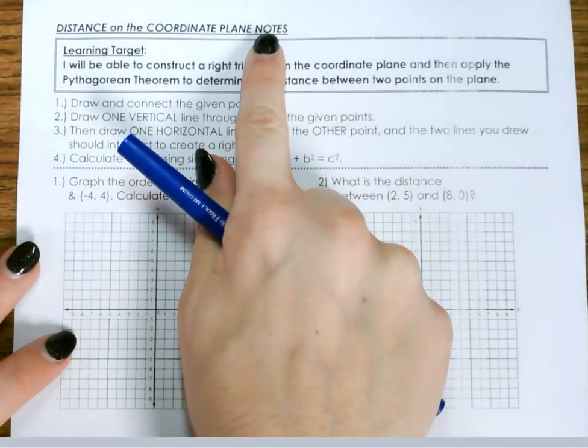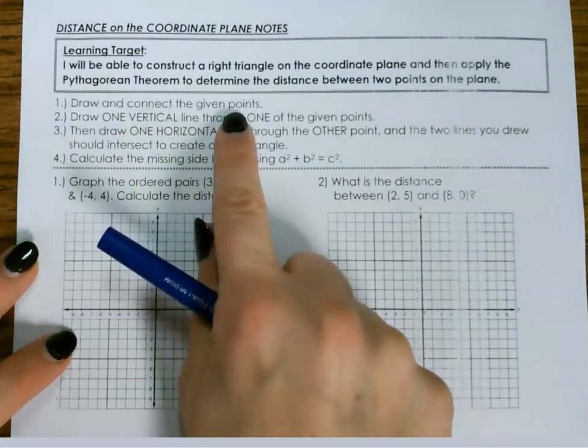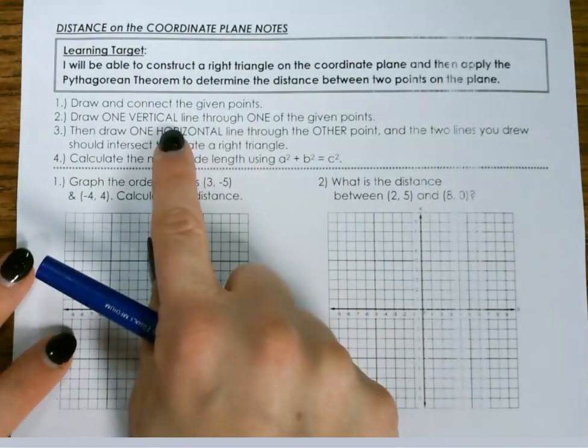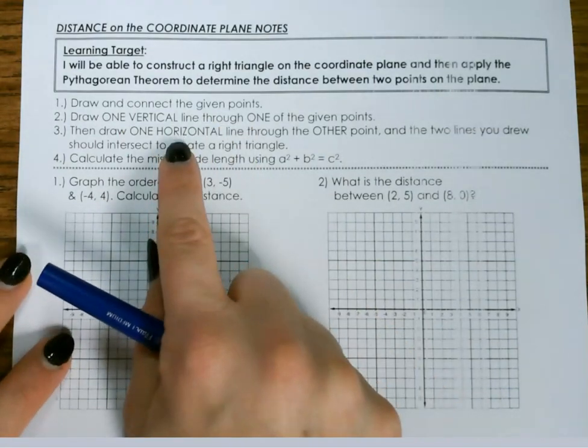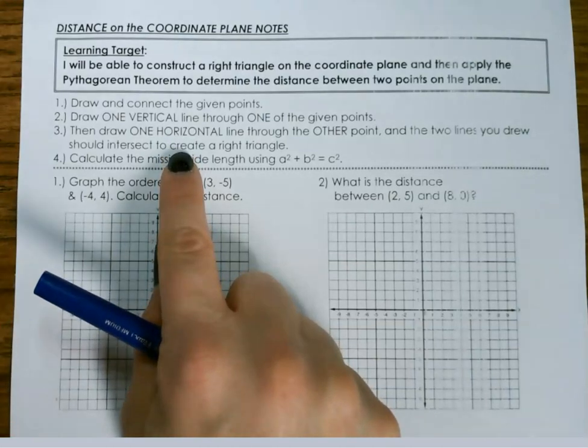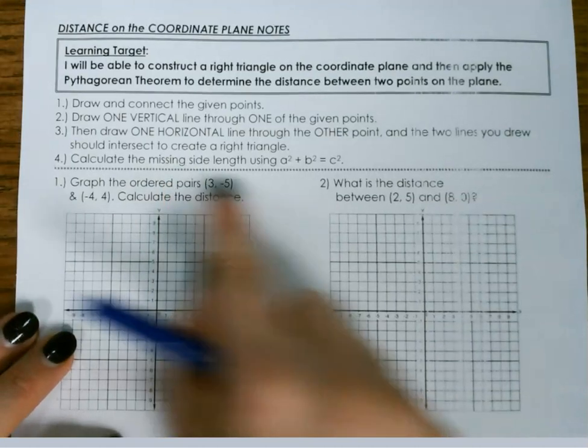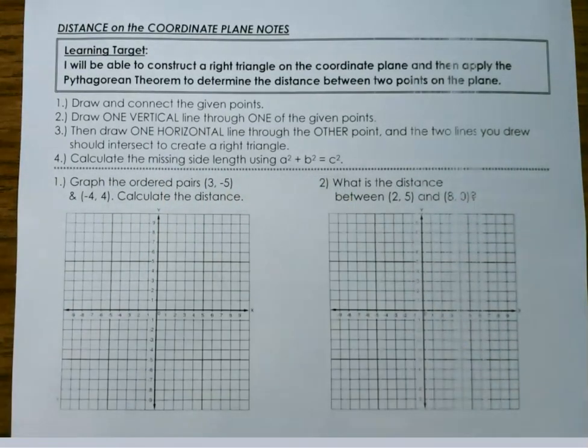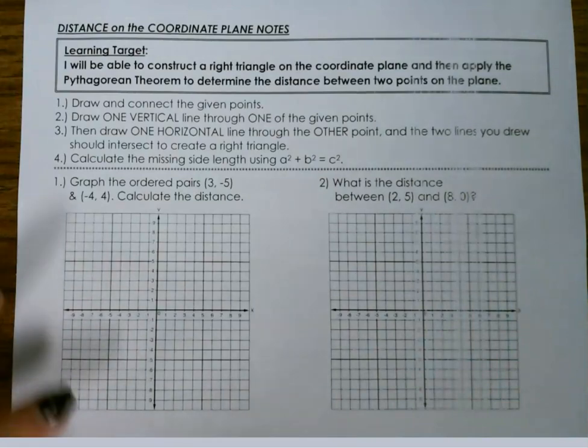Distance on the coordinate plane. First we draw and connect the given points, draw one vertical line through one of the given points, then draw one horizontal line through the other point, and the two lines you drew should intersect to create a right triangle. Then we calculate the missing side using a squared plus b squared equals c squared, the Pythagorean theorem.